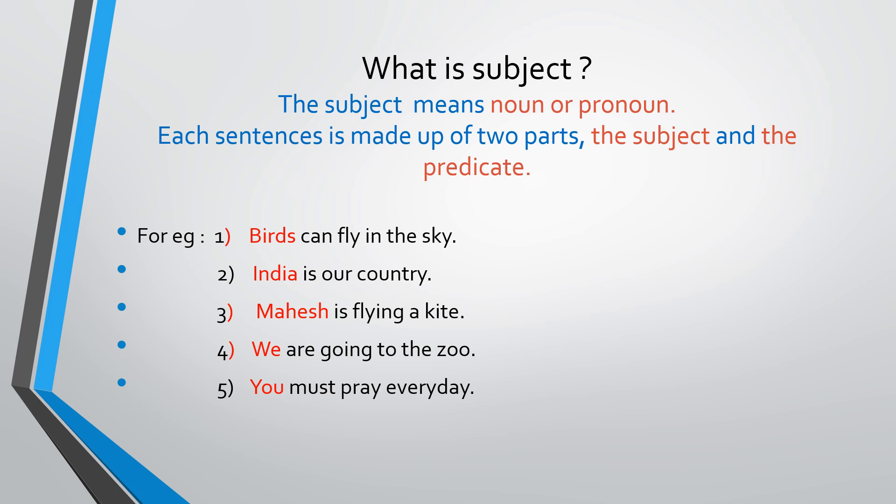A sentence always begins with a noun or pronoun — without that, a sentence never starts. However you prepare a sentence, it should begin with a noun or pronoun, and that beginning word is a capital letter. I have given you five examples. In these five examples, whatever you see in red color, all those are nouns or pronouns and they are known as the subject. See the examples: 'Birds can fly in the sky' — Birds is the subject. 'India is our country' — India is the subject.